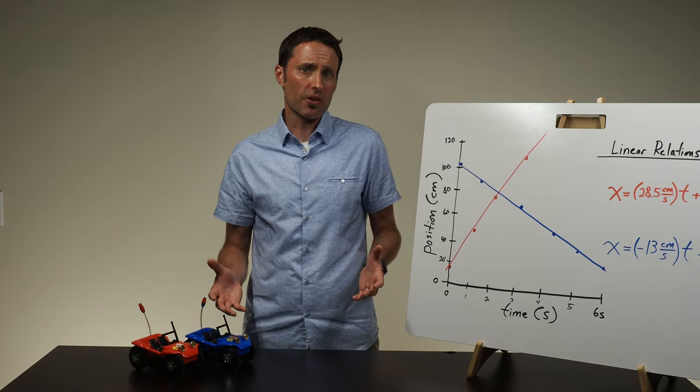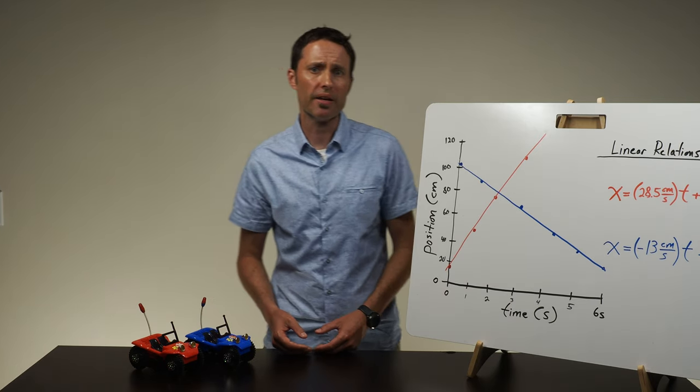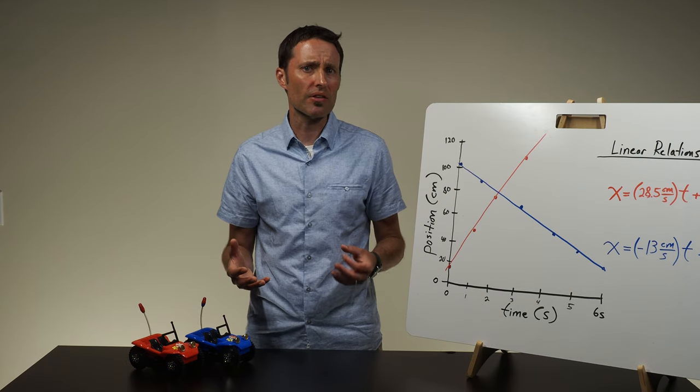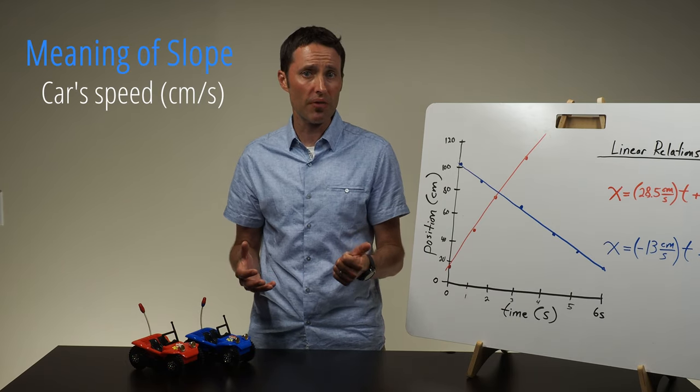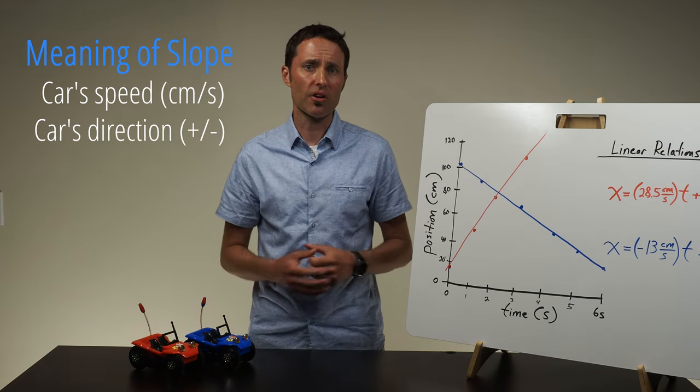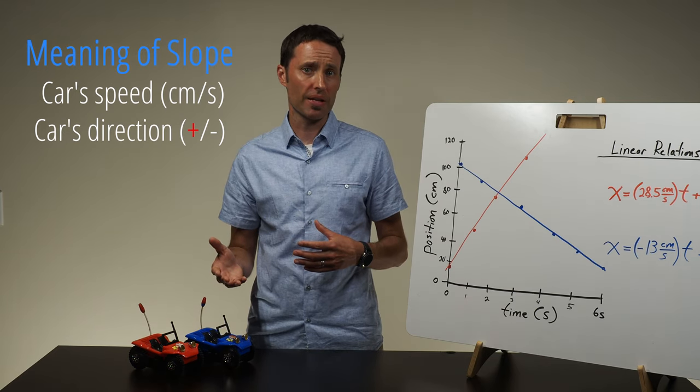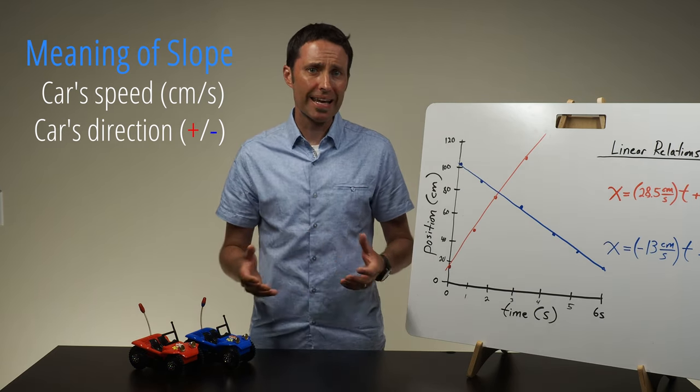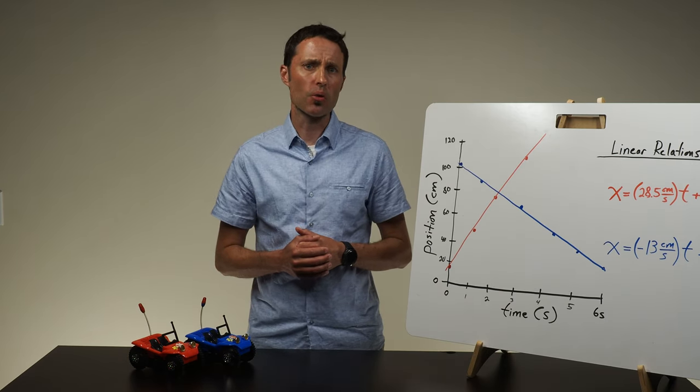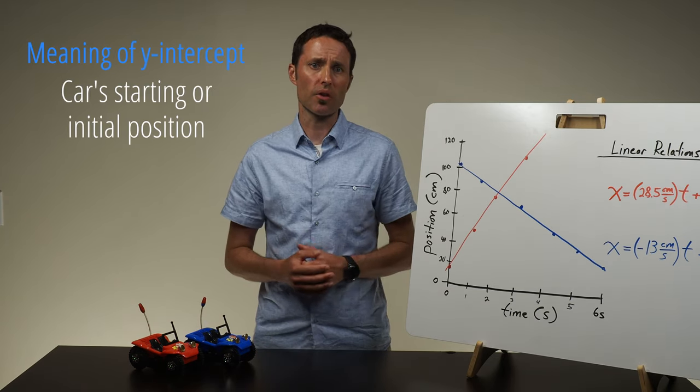Now you can ask what led to different slope and y-intercept values. Why were some slopes positive and other slopes negative? The discussion surrounding these questions should lead students to the conclusion that the slope represents both the speed of the car, how many centimeters the car travels each and every second, and the direction the car is moving. A positive slope indicates the car is moving away from the zero position, and a negative slope indicates the car is moving towards the zero position. The students should also conclude that the y-intercept of the position versus time graph is the starting or initial position of the car.